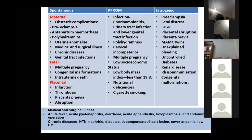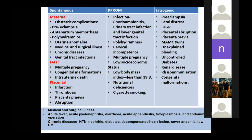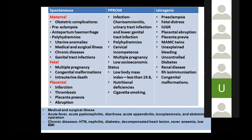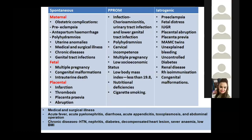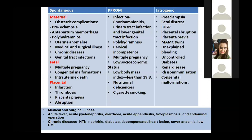Etiological factors include obstetric complications such as preeclampsia and antepartum hemorrhage, anything causing uterine distension like polyhydramnios, uterine anomalies, medical and surgical illnesses like pyelonephritis, diarrhea, appendicitis, or any surgery carried out during pregnancy, as well as fetal complications and maternal-placental indications.